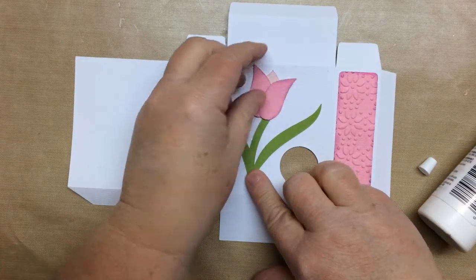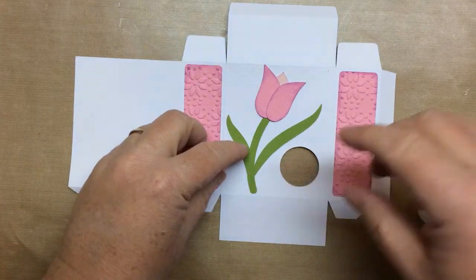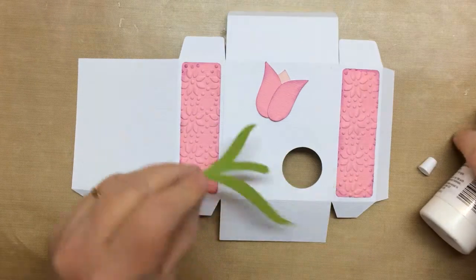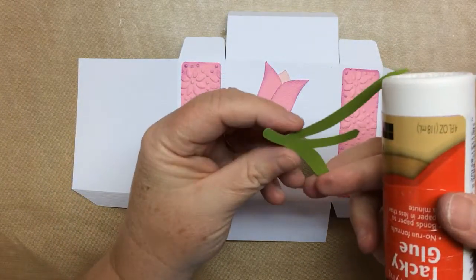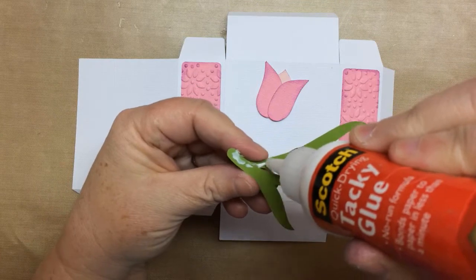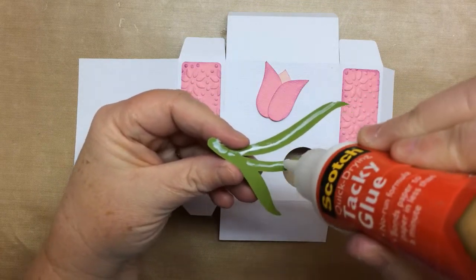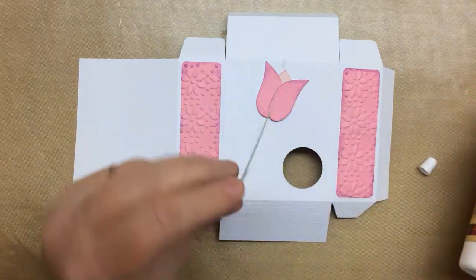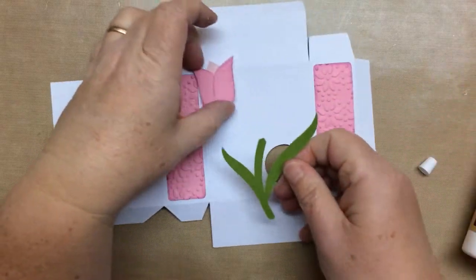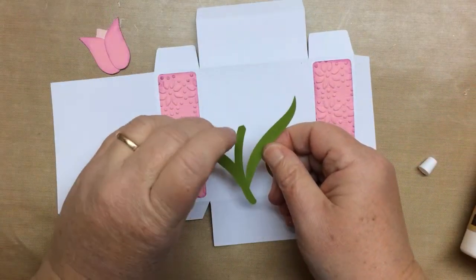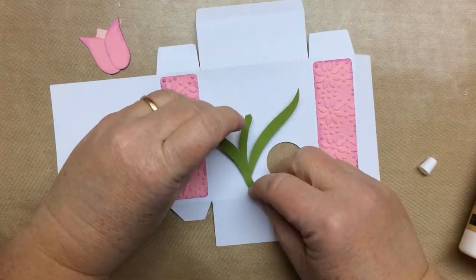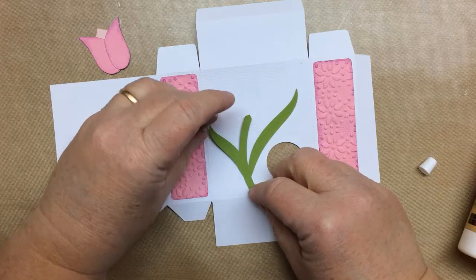And then I just place the stem of the tulip first, and then we'll overlap that top tulip flower piece. Real simple. It's really fast to make these too. I'm just going to angle it around that opening, the stem.